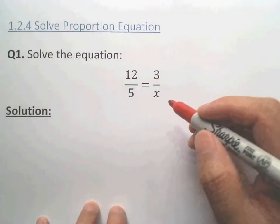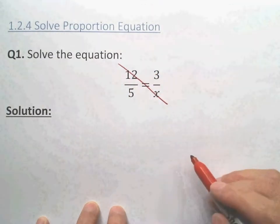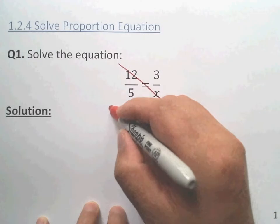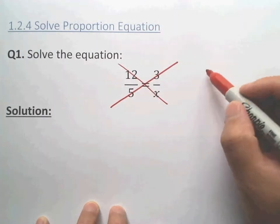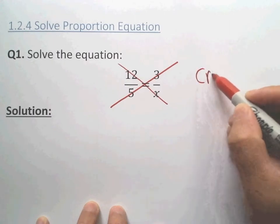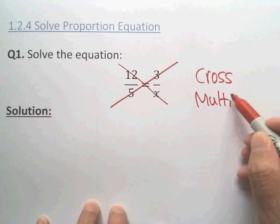Cross multiply is this: 12 times x equals 5 times 3. Cross multiply. That's all we need to do.